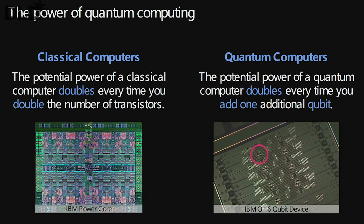The performance of quantum computers increases exponentially as 2 to the power of n, where n is the number of qubits. Compare this to a classical computer: today we have about 10 billion transistors in one microprocessor. If you add one transistor, it doesn't really matter — you only double performance if you double the number of transistors. In a quantum computer, however, if you add one additional qubit, you double the performance of the computer. That's the fundamental difference.